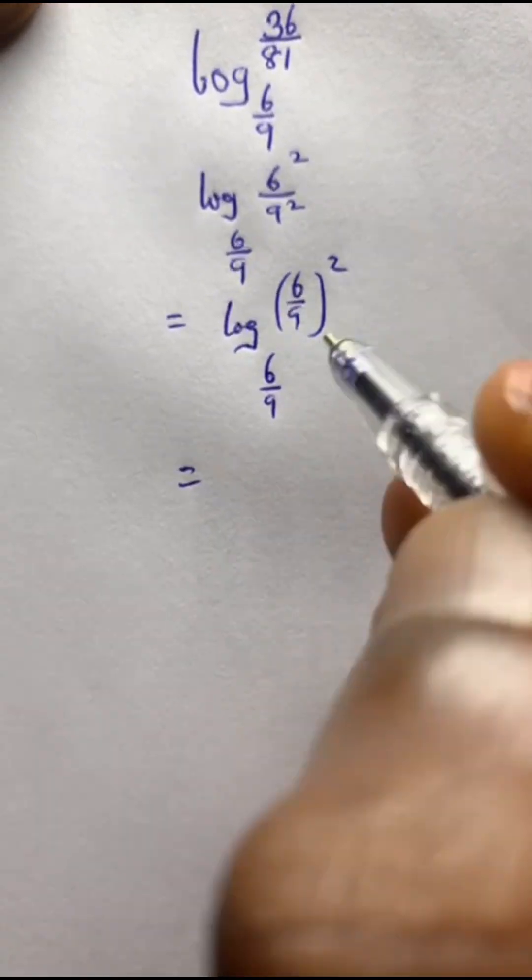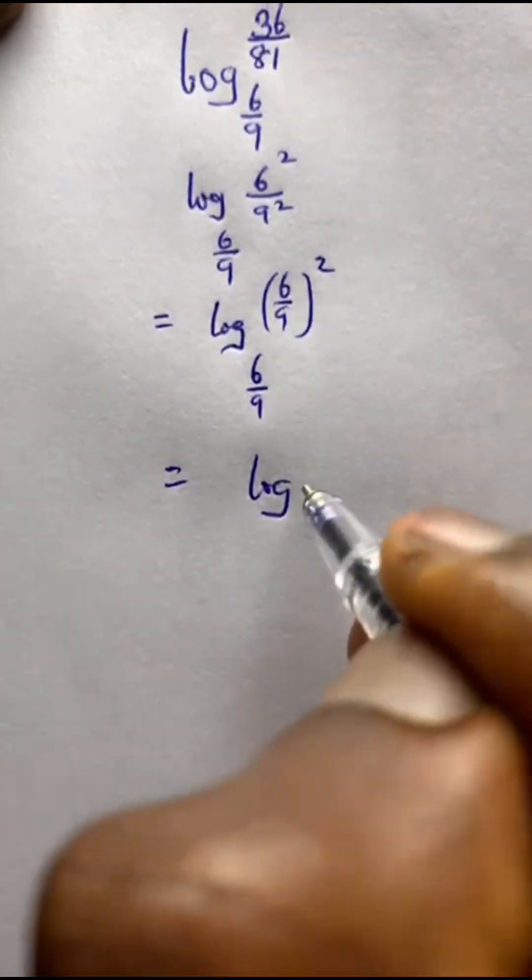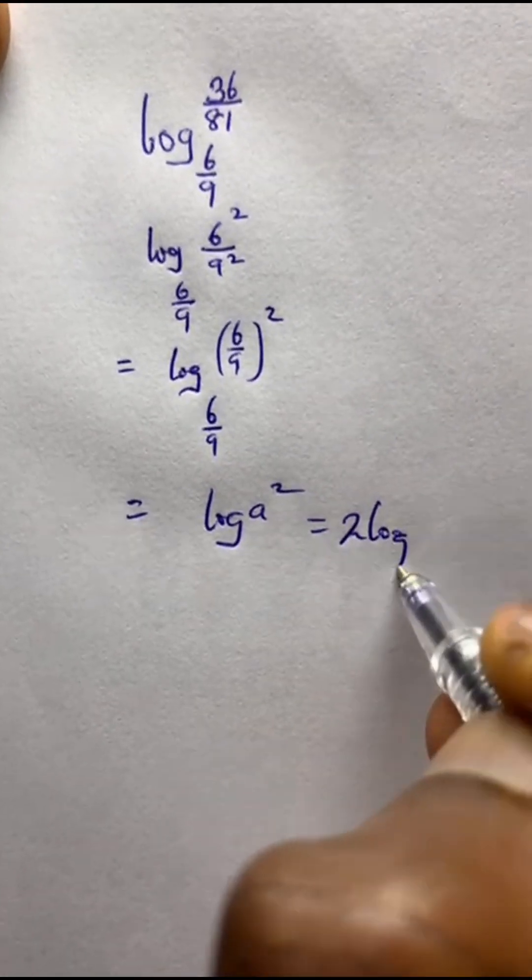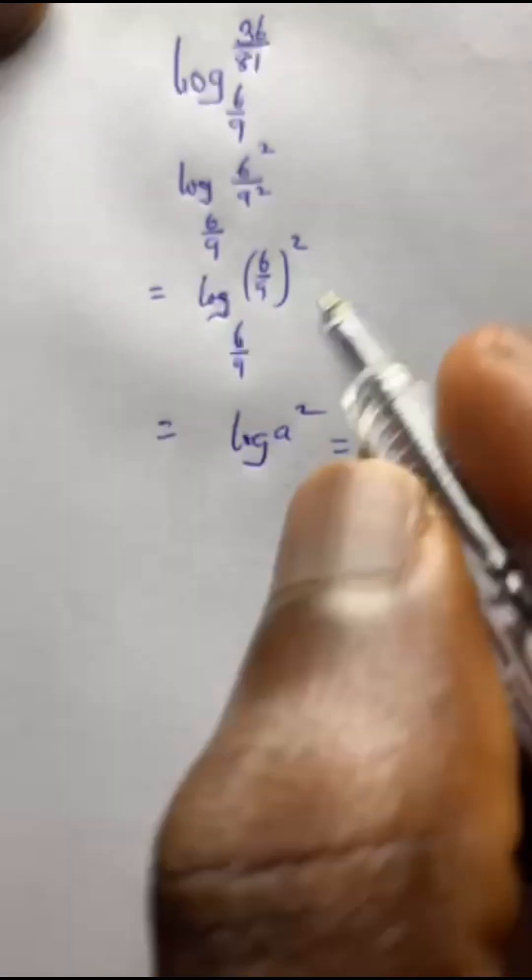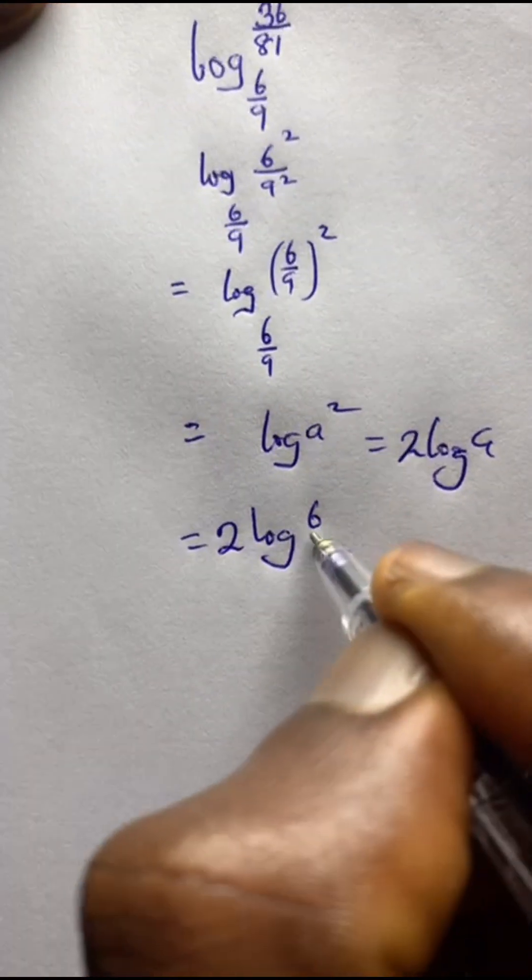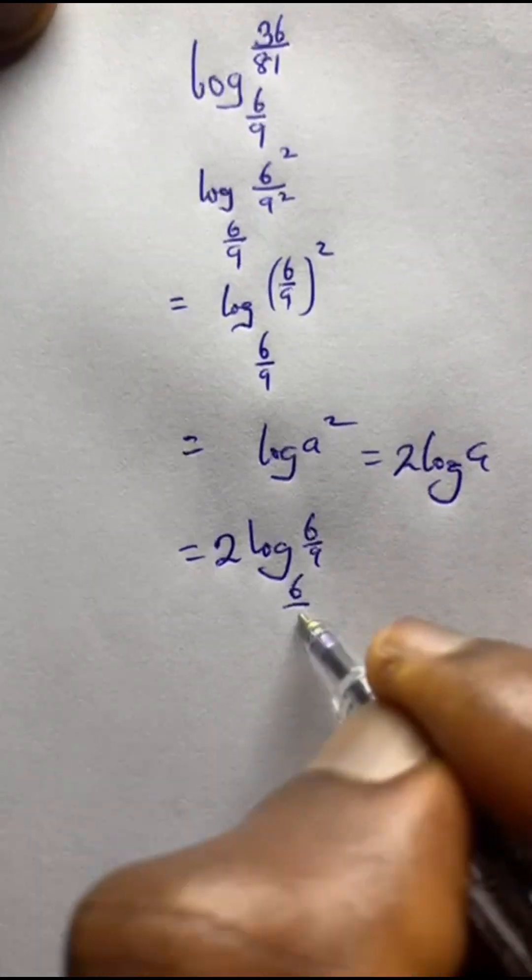Now listen up, this is equal to - when you have something like this, log of a to the power of 2, it becomes 2 log of a, the 2 comes here. So bring this, it becomes 2 log of 6 over 9 to the base of 6 over 9.